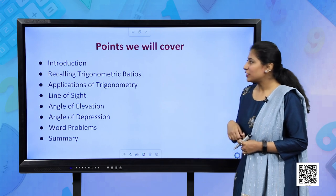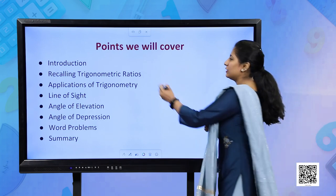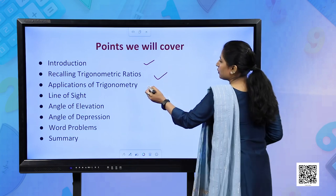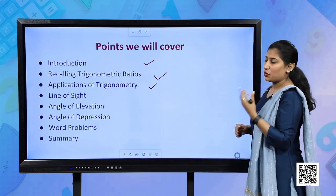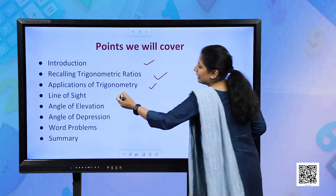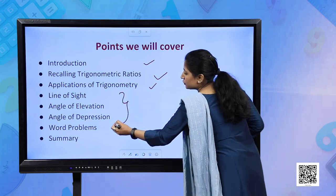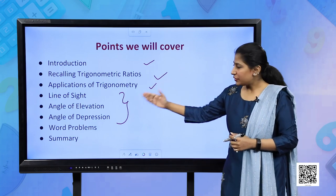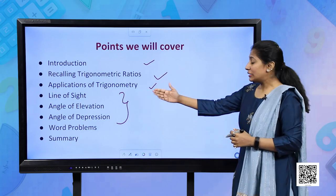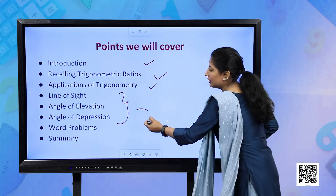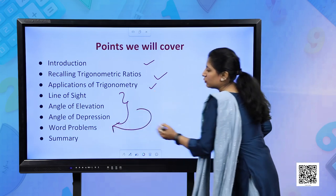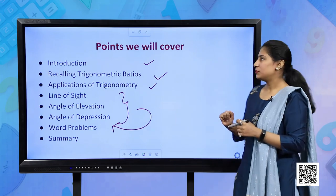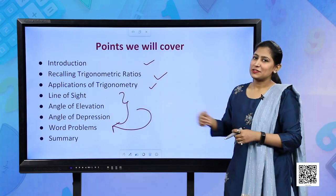Let us see what all points we are going to cover. Small introduction - we will be recalling trigonometric ratios and talking about some applications of trigonometry. Then there are three terms which are very important for this chapter: line of sight, angle of elevation, and angle of depression. After we understand these, we will be solving word problems - these three terms only will help us solve all the word problems of this chapter. Then we will summarize.